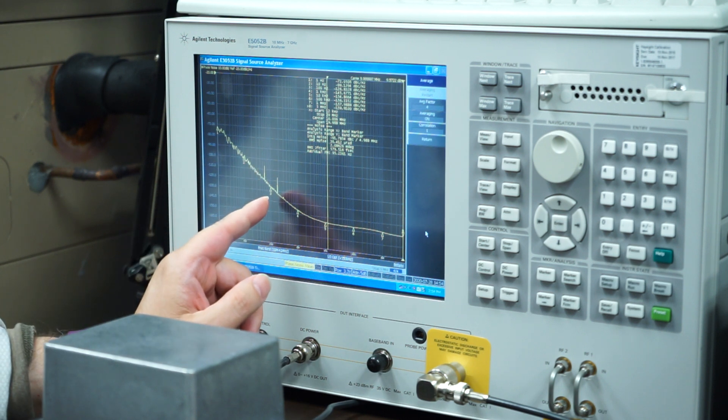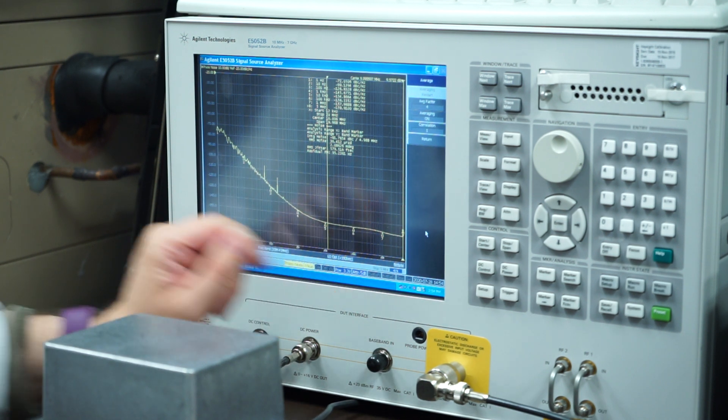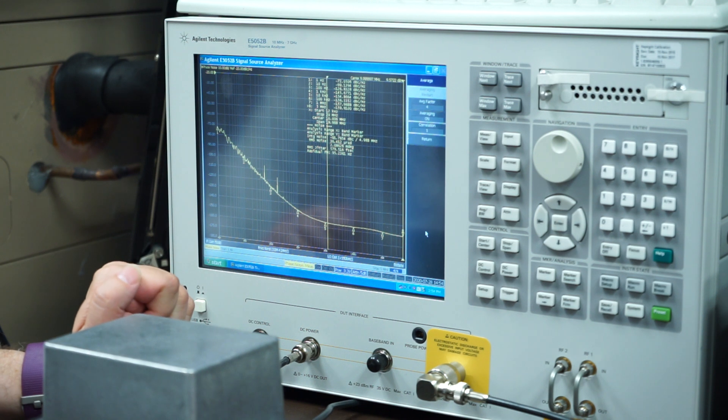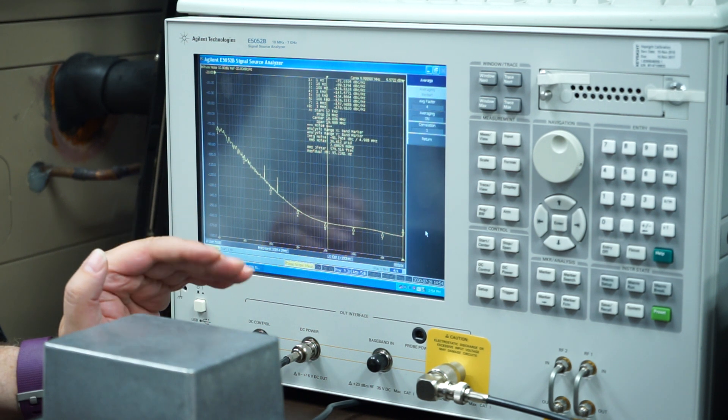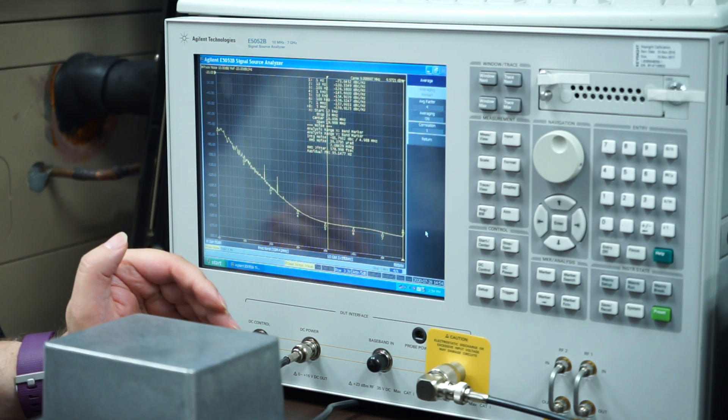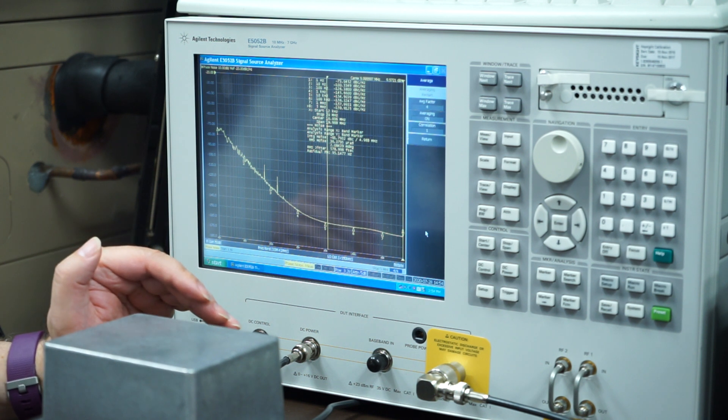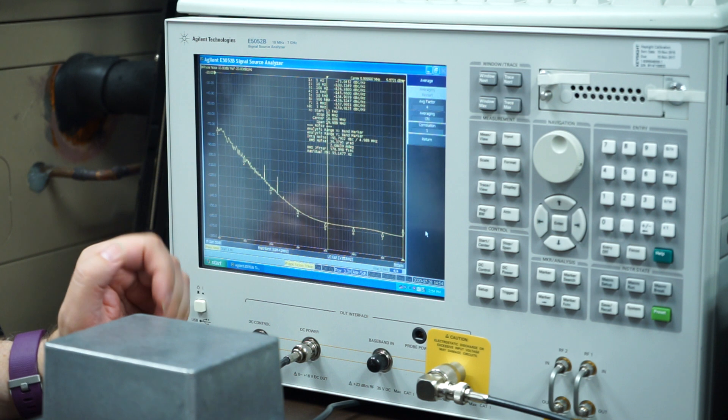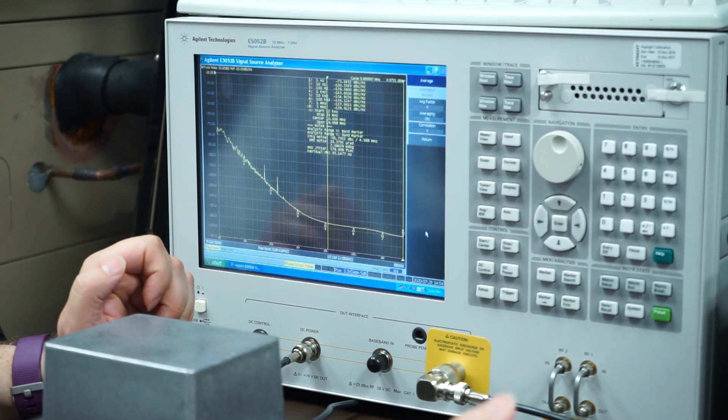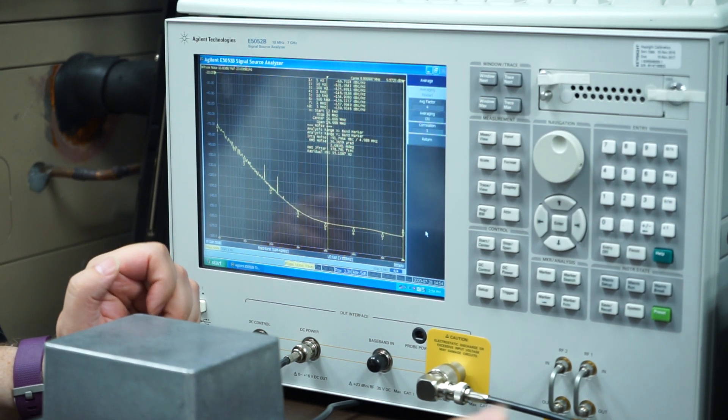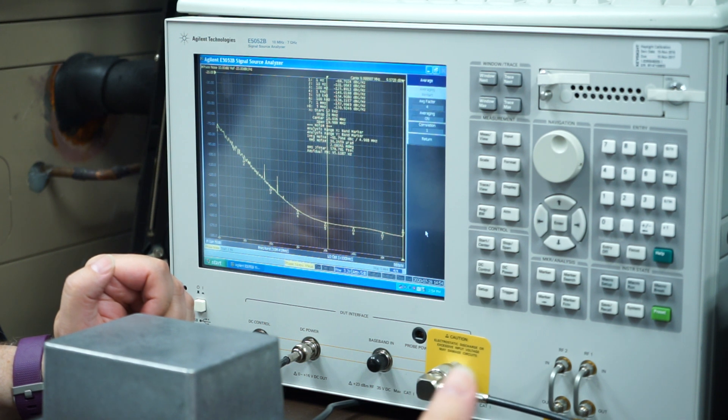If those spikes were in the measurement bandwidth between 12k and 5 megahertz here, we would have extra jitter integrated into the noise measurement, which is not a part of the device. So our data would be inaccurate based on noise around the test environment, as opposed to how the device performs by itself.